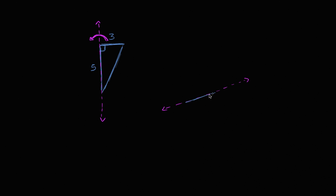Then I can draw my triangle. So my triangle would look something like this. Once again, this is five units, this is three units — this is a right triangle. I'm going to rotate it around the line.